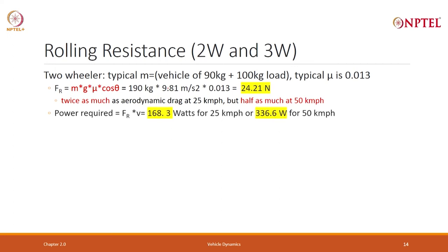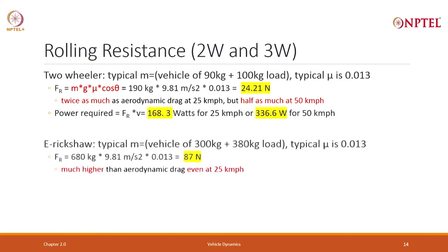Power requirement: multiply force by velocity. It comes to approximately 168 watts at 25 km/h or 236 watts at 50 km/h. For an E-Rickshaw, the mass is much larger — 300 kg vehicle plus 380 kg load. Mu is similarly 0.013, so the force comes out to be 87 Newton — much higher than aerodynamic drag even at 25 km/h. Power required is 625 to 642 watts at 25 km/h.